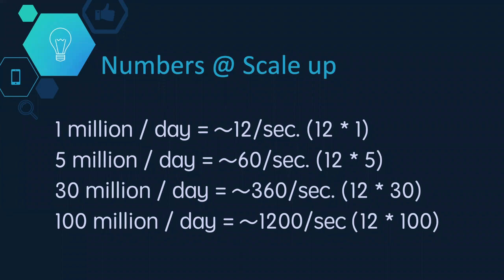Once we know that, we can determine what scale we need to support easily. For example: 1 million per day is about 12 transactions per second; 12 million per day is about 60 transactions per second; 30 million per day is about 360 transactions per second; and 100 million per day — like Facebook, Twitter, or Instagram — comes down to 1,200 transactions per second. The more you keep scaling up, the smaller the per-second number looks, but that's not the complete reality.